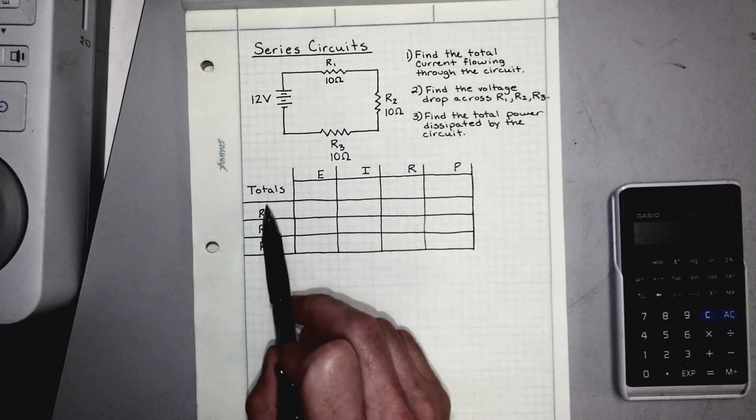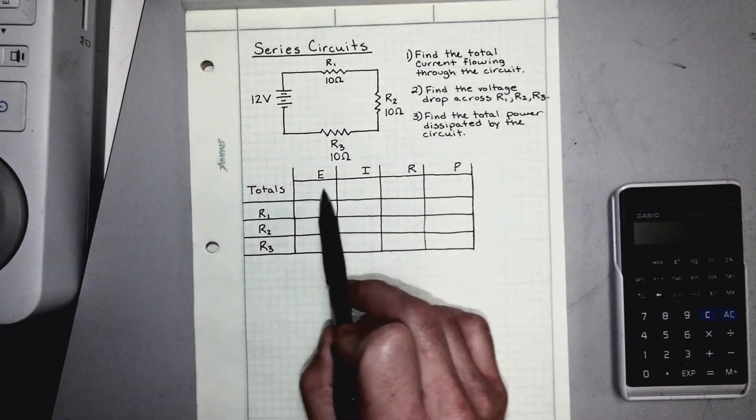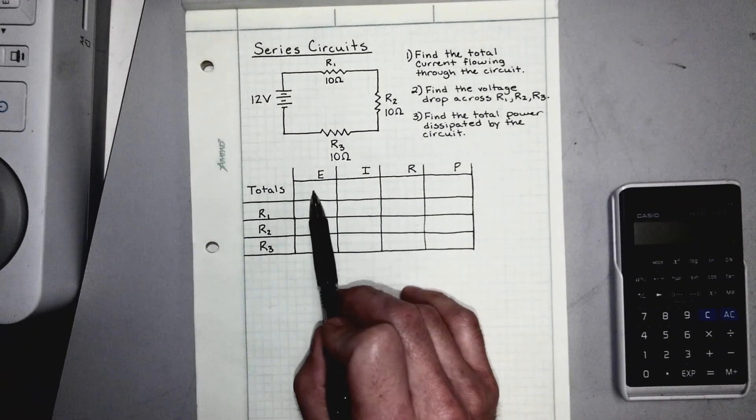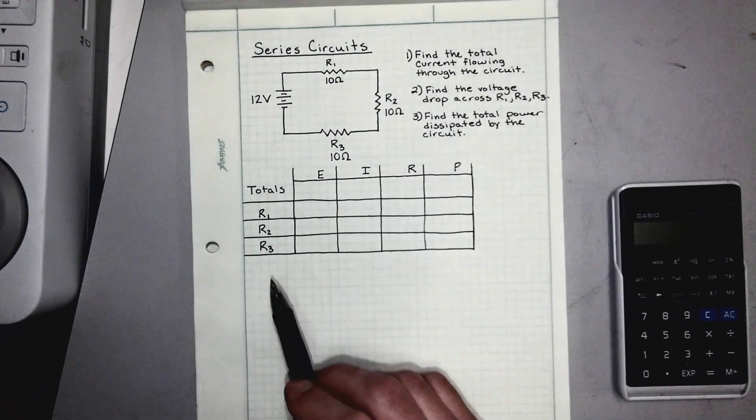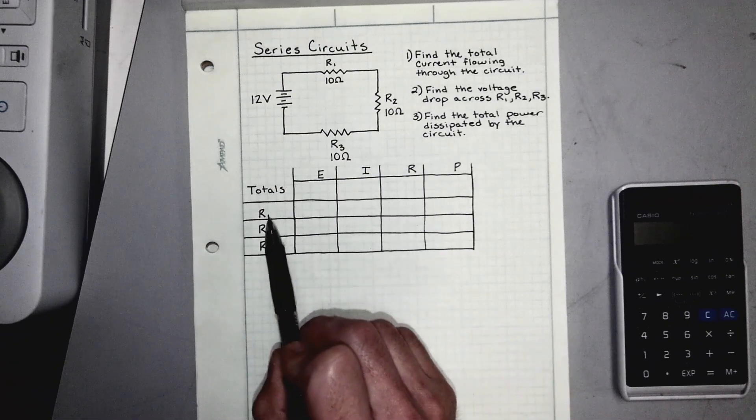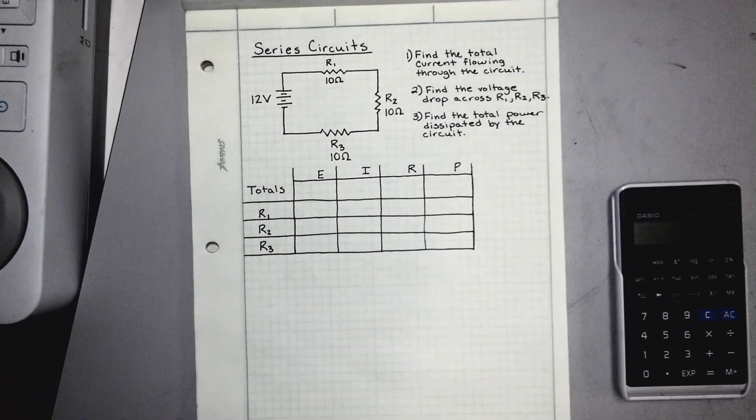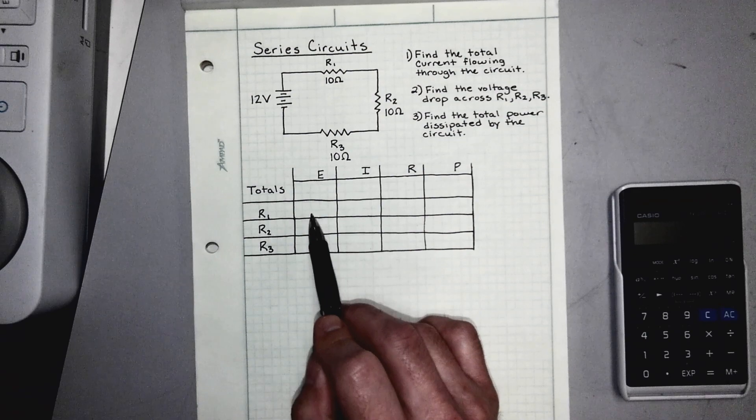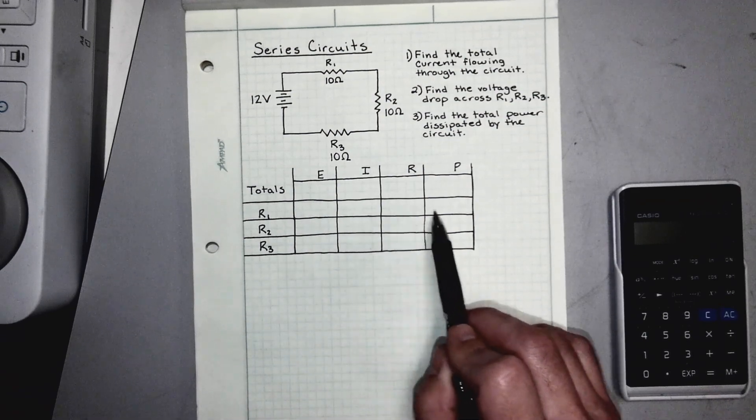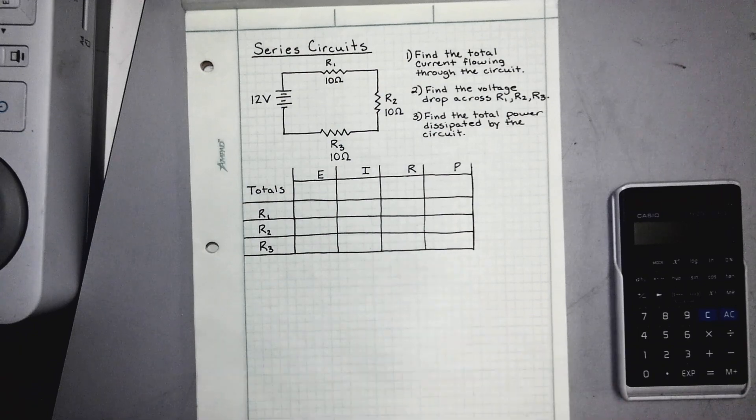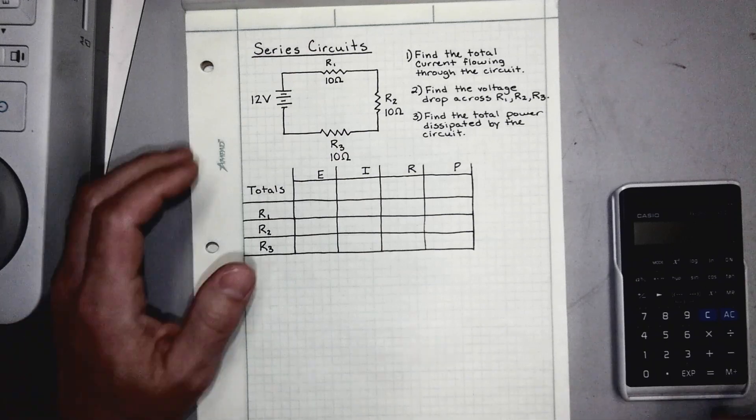So we have a row for all of the totals—we can have total voltage, total current, total resistance, and total power dissipated. And then we have rows for each individual resistor. So those will have a voltage drop across them, a current flowing through them, each will have a resistance, and then each individually will have power dissipated at the resistor.